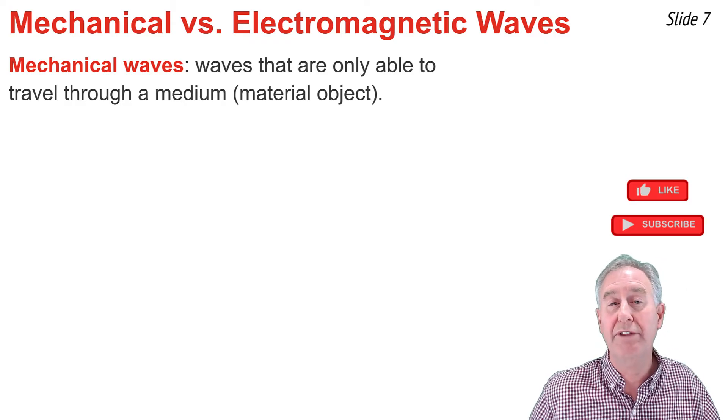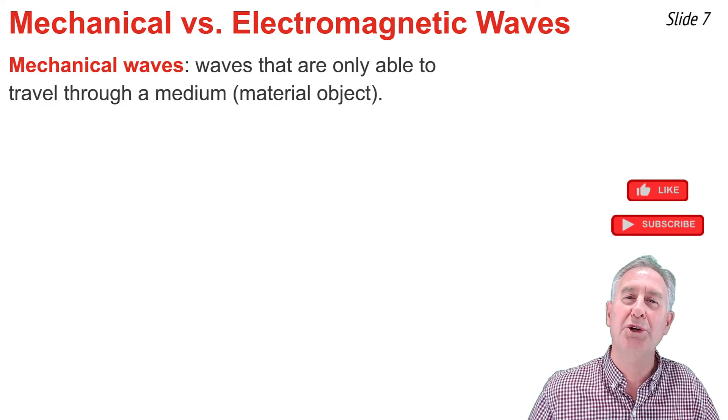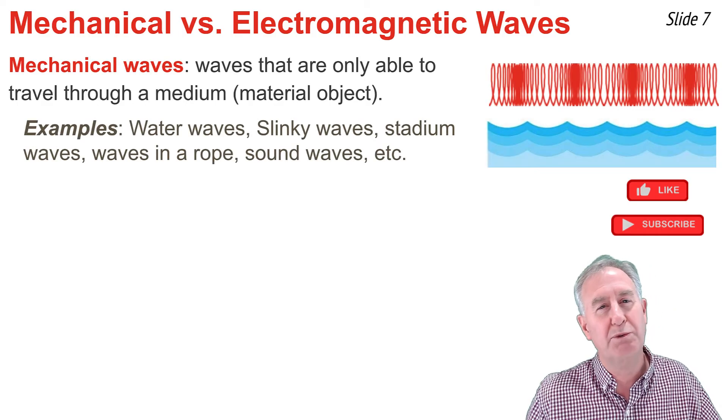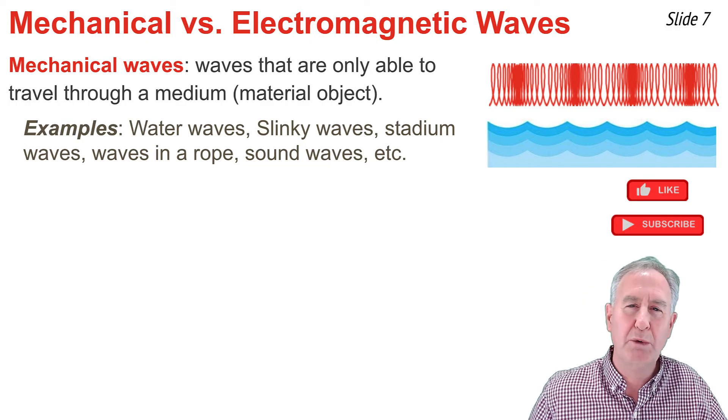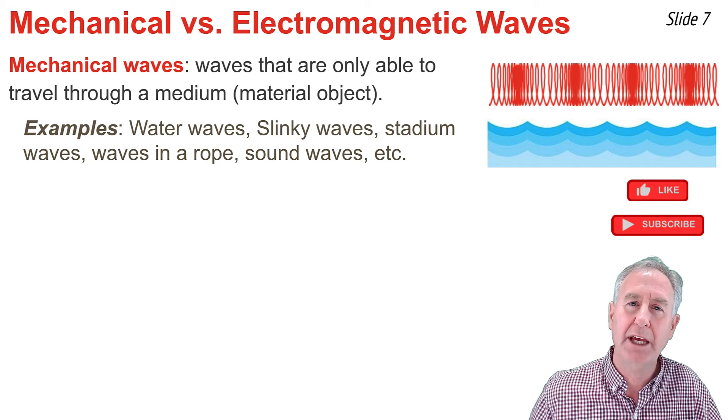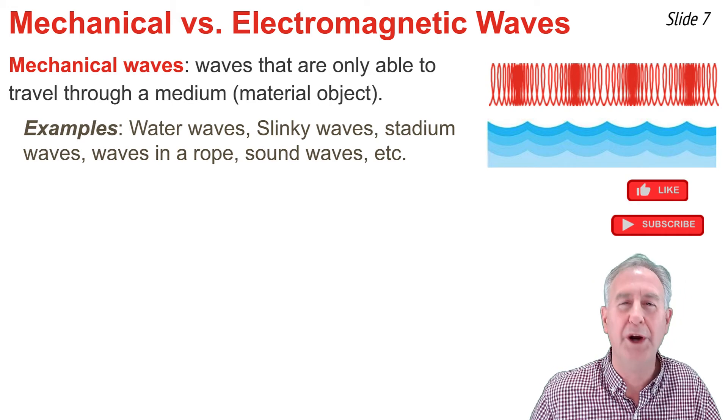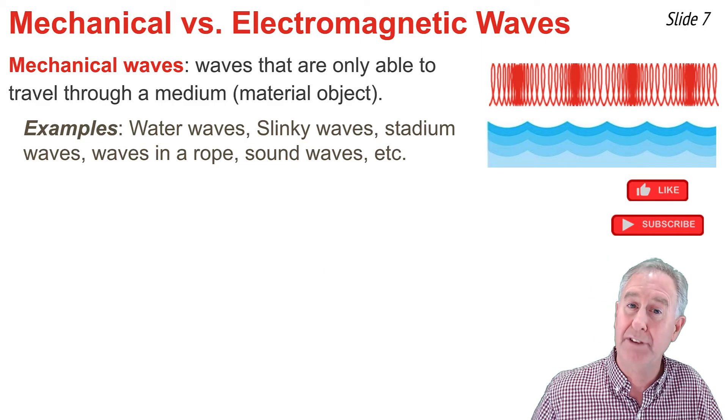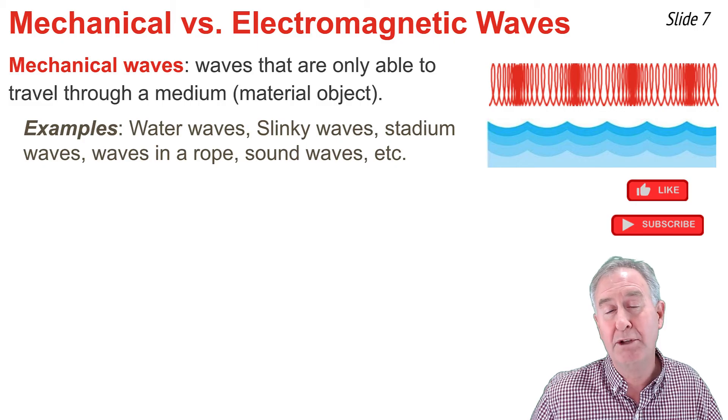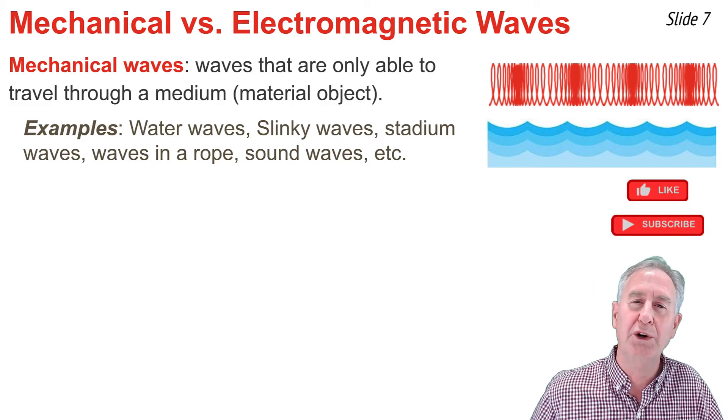A mechanical wave is a wave that requires some sort of physical material or medium in order to exist. Stadium waves, water waves, sound waves, slinky waves, waves in a rope. These are all examples of mechanical waves. You can't have a slinky wave unless you have a slinky, and you can't have a water wave unless you have water. And you can't have a stadium wave unless you have fans in the stadium. These types of waves require some sort of material or medium in order to exist.